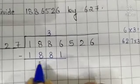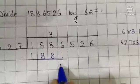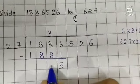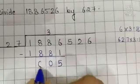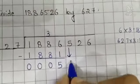Now subtract 1881 from 1886. So 6 minus 1 is 5, 8 minus 8 is 0, 8 minus 8 is 0, and 1 minus 1 is 0. Now bring down 5.